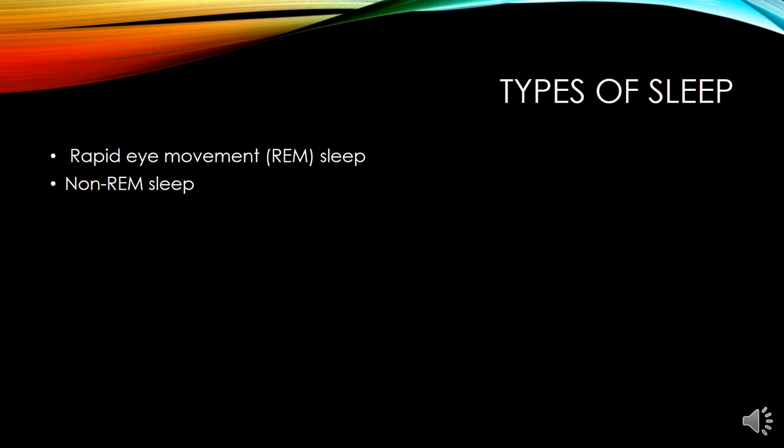Non-REM sleep is a dreamless sleep. During non-REM sleep, the brain waves on EEG recording are typically slow and of high voltage. Breathing and heart rate are slow and regular, blood pressure is very low, and the sleeper is relatively still. It is also known as quiescent sleep and collectively covers sleep stages 1 to 3, previously known as stages 1 to 4. Rapid eye movement is not included, which is why no dreaming takes place.